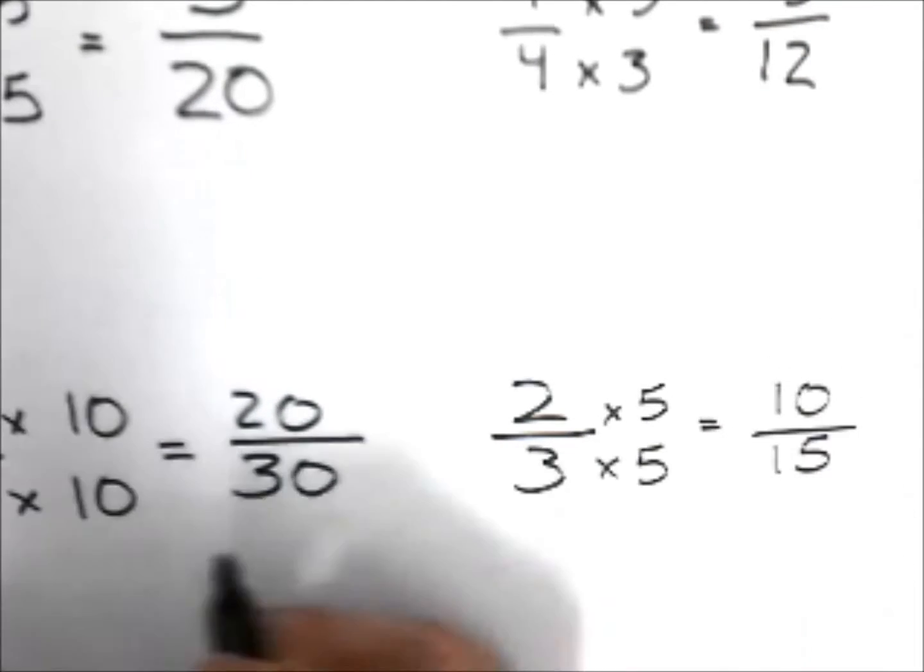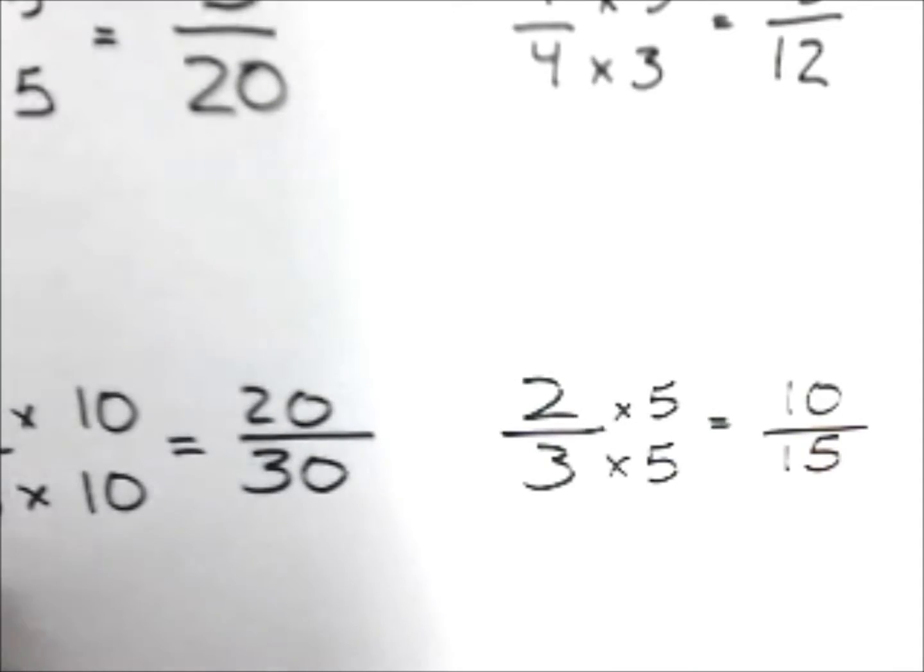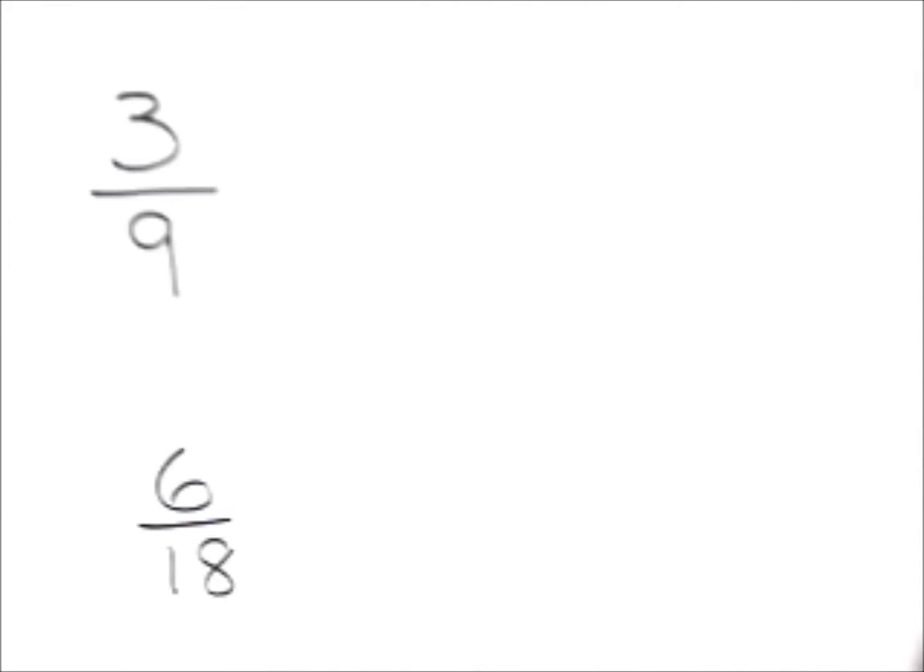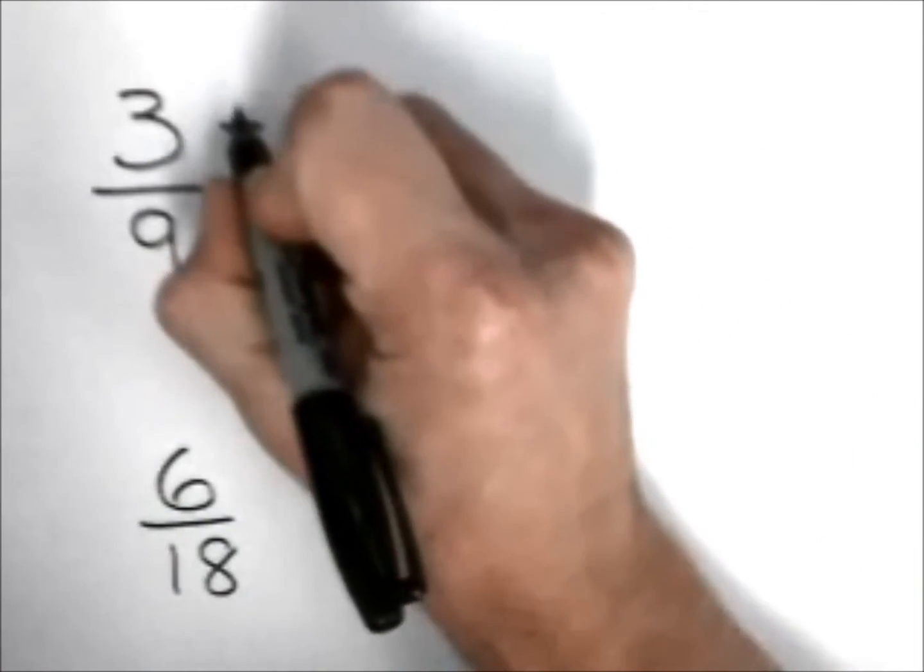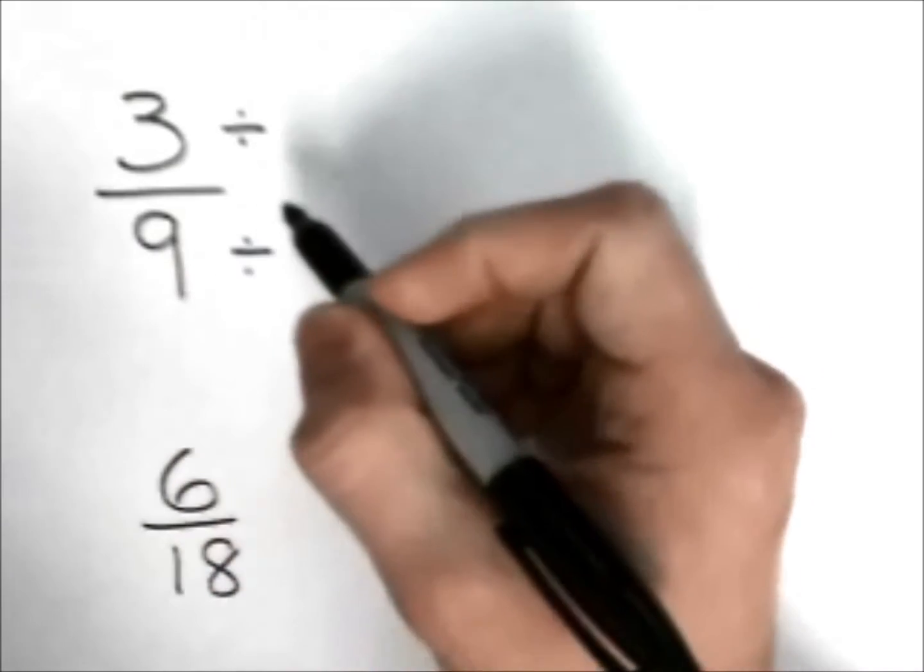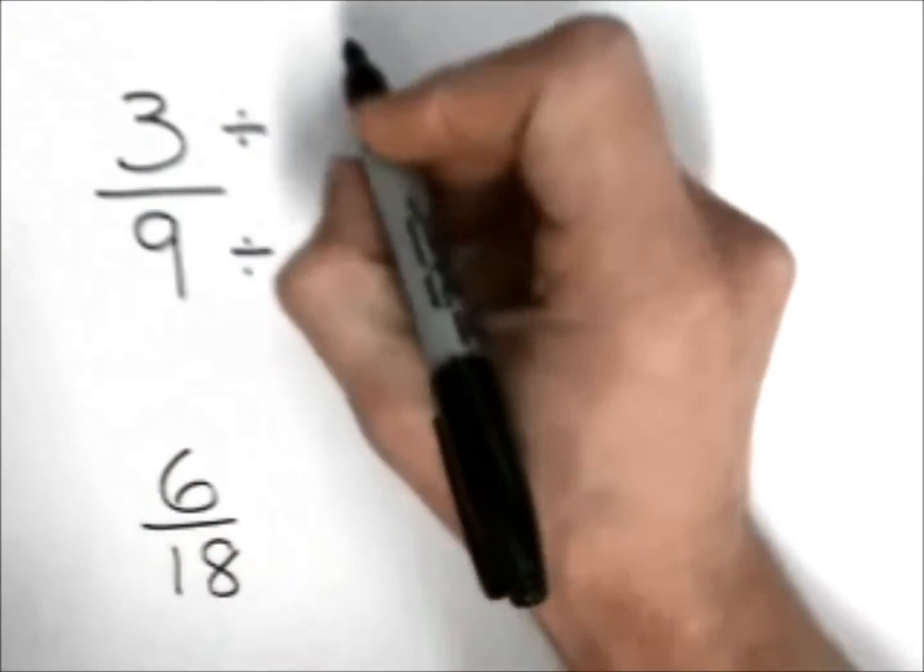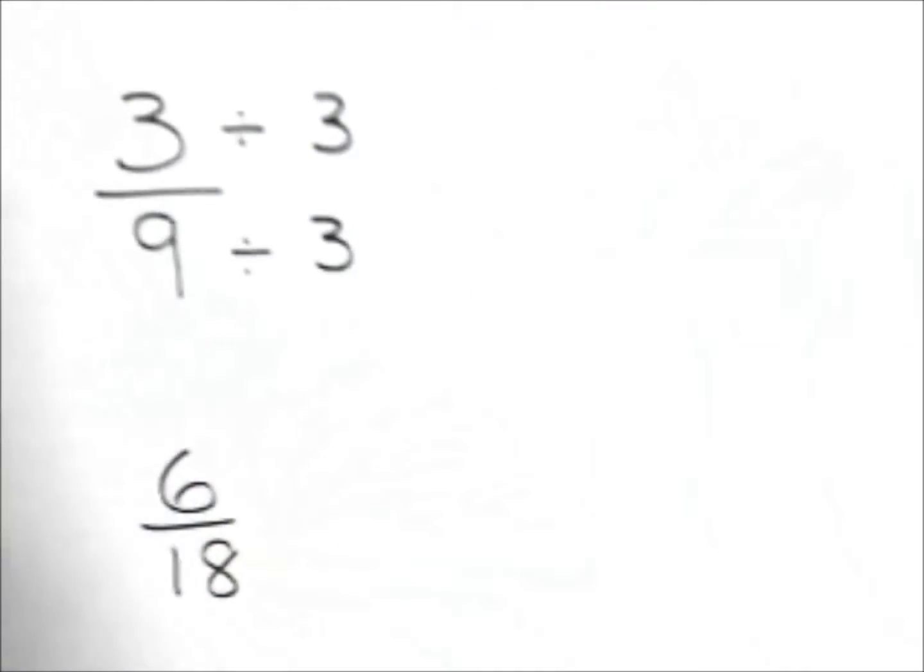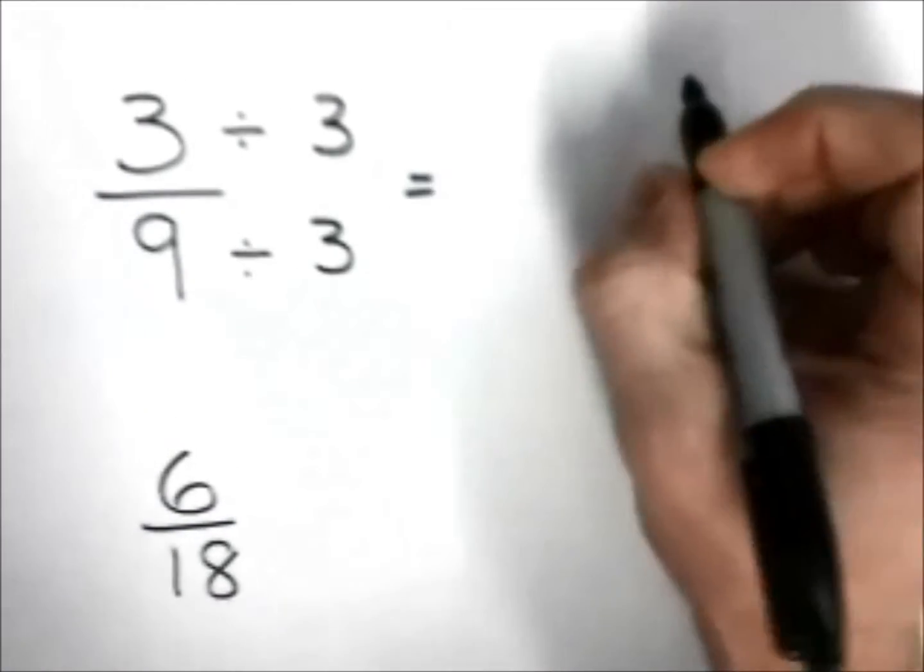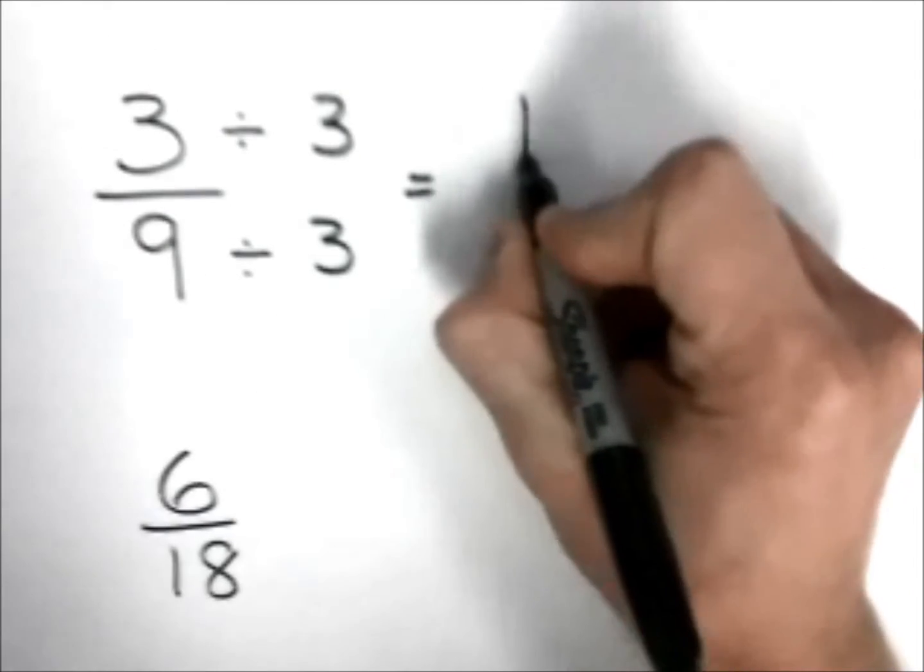Now, what happens when you have a fraction like three-ninths and six-eighteenths where they just look a little bit bigger than the normal fraction? Well, you can actually use a divisor to make this fraction look a wee bit smaller. For this fraction, I know three goes into three and three goes into nine, so I'm going to use a divisor of three. Very good, boys and girls. And I'm going to say three goes into itself one time, and three goes into nine three times. So three-ninths is the same as one-third.